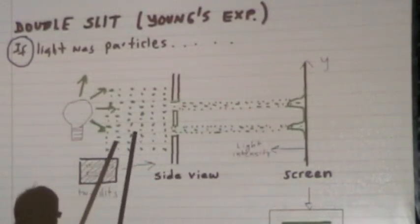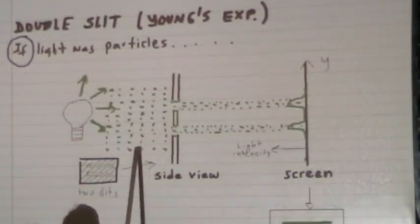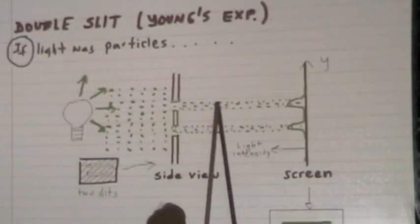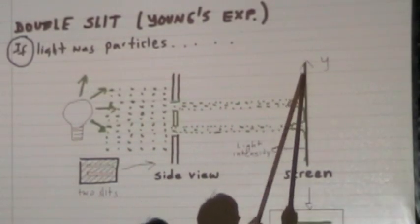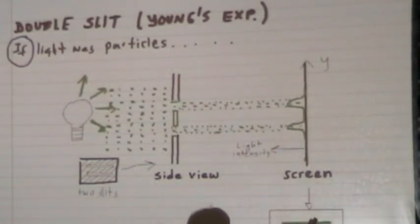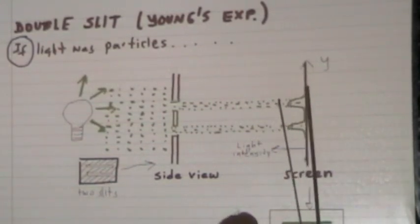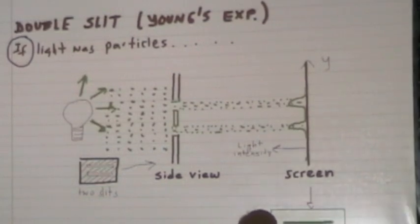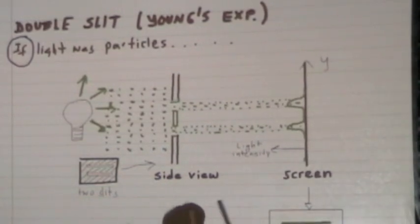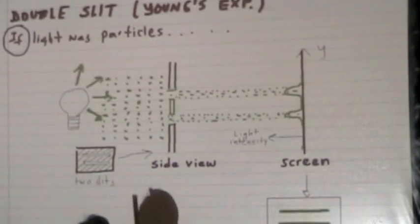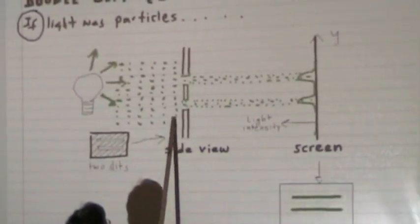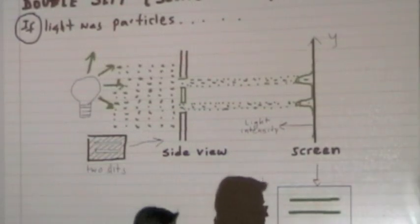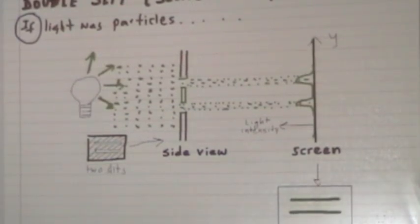So if light was a stream of particles, then at the places where it finds the slits, those photons would be able to go through, and they would hit the screen. If you were looking at this screen — this is again the side view — the front view of the screen would show, say the light is green, you would see this line and this line corresponding to each one of the slits. The screen is just blocking some and letting others pass. That's what you would expect if light was made of particles.